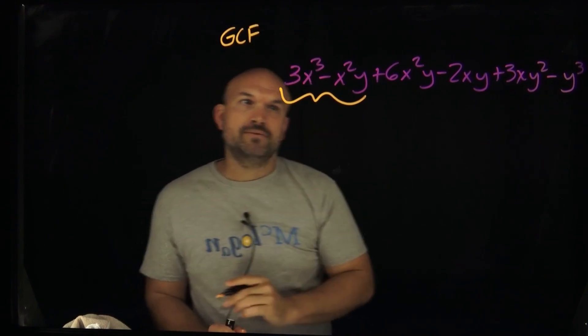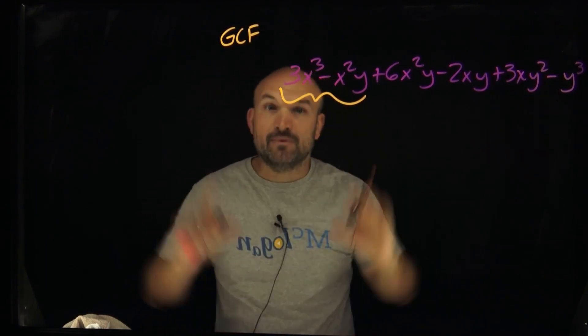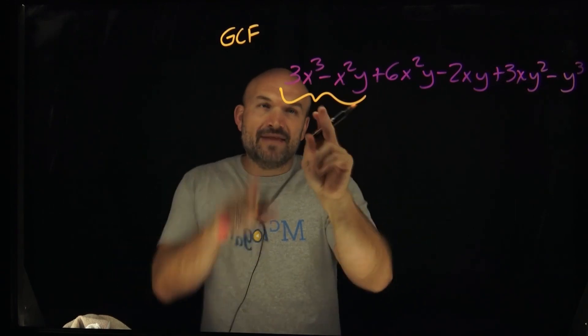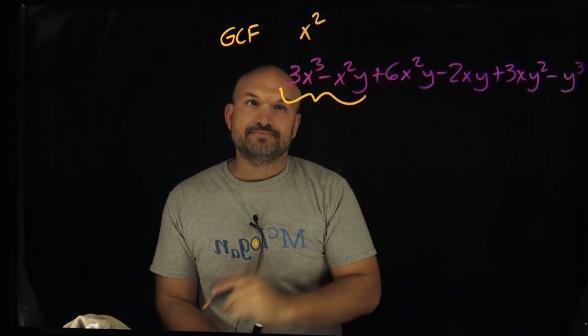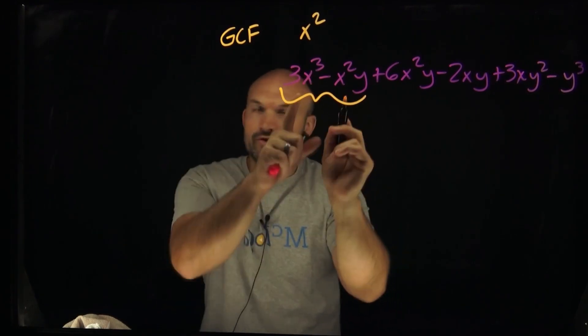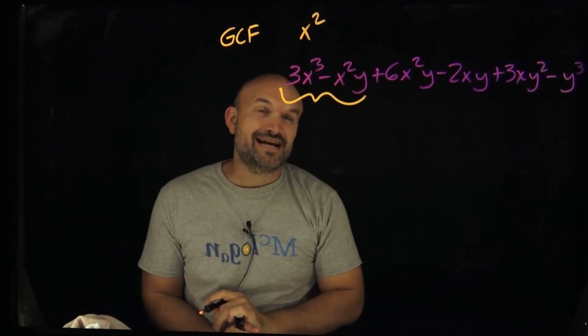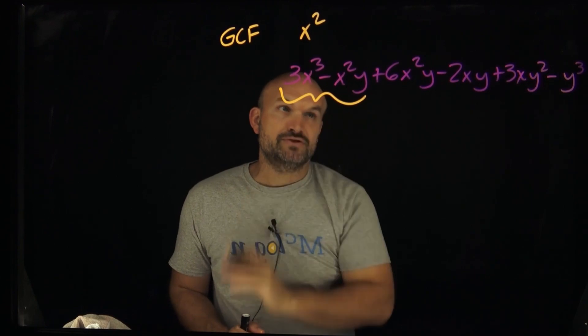Now I'm going to write the GCF up above. So you recognize they both have an x. Now what's the highest power of x that I can evenly divide into both of these? Well, that's just going to be an x squared. They both don't share a number, nor do they share a y. So that is going to be my greatest common factor for those two terms.